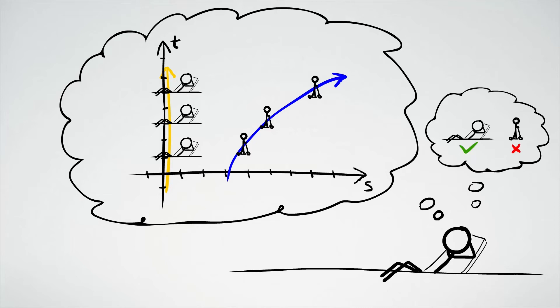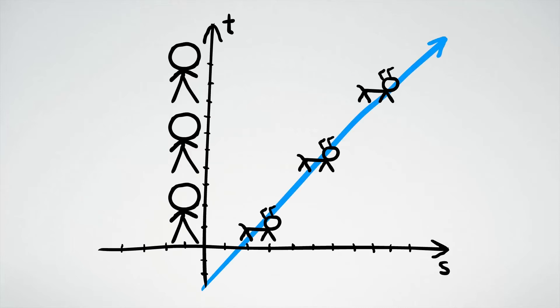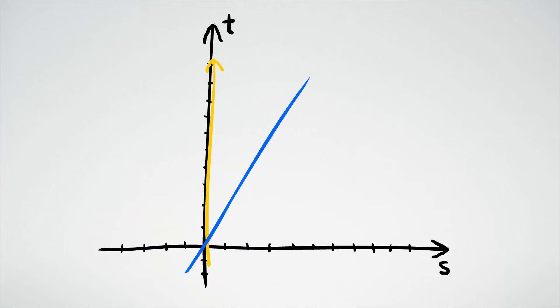Here we can see that the world line of the dog is diagonal while the world line of the person is vertical, so it means this space-time diagram is drawn from the person's perspective. The angle of the world line represents the speed of the object: 90 degree slope means zero speed and zero degree slope means infinite speed.